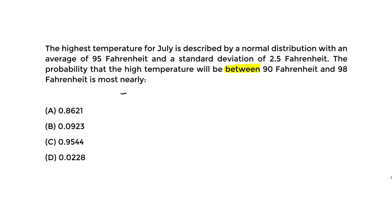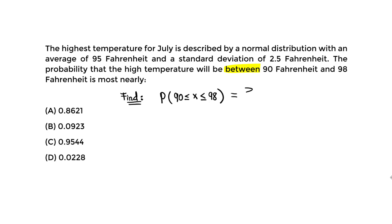That's what we want to find. The way this is denoted using the probability function: P stands for probability, and we're going to write it as 90 ≤ X ≤ 98. Essentially it's just the range of 90 to 98 — between 90 and 98 — and that's what we want to find.